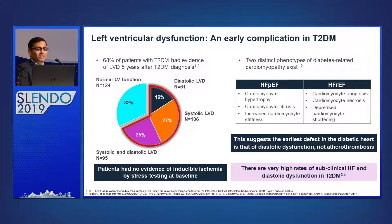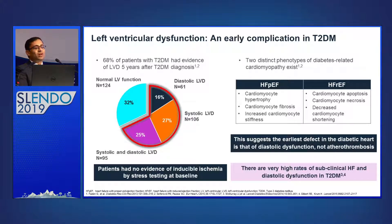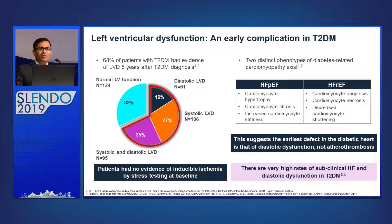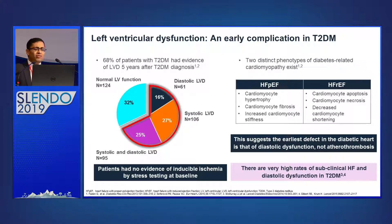Most of the time it is diastolic dysfunction. As you can see from this graph, almost 41 percent of patients had diastolic dysfunction and 27 percent had systolic dysfunction. If you do an ECG or even a stress ECG on the patient, you might not find anything, but the patient is still having left ventricular dysfunction.